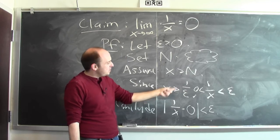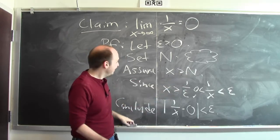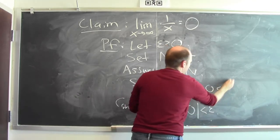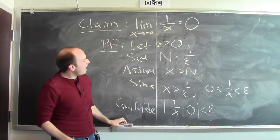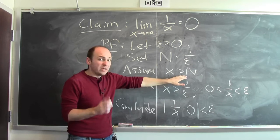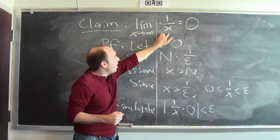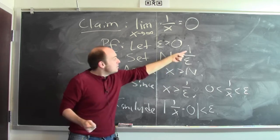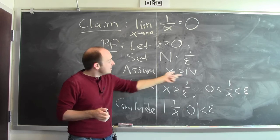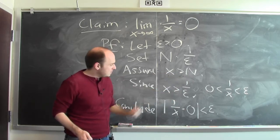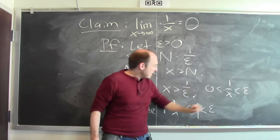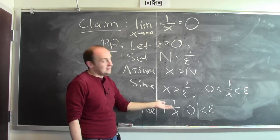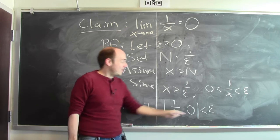So how can I guarantee that x is bigger than 1 over epsilon? I'm going to set N equal to 1 over epsilon. Now look at what I've got here. I set N equals 1 over epsilon, and then I get to assume that x is bigger than N. You're challenging me with epsilon to say that 1 over x is within epsilon of 0. I get to respond by making x sufficiently large — N equals 1 over epsilon. And if x is bigger than N, then x is bigger than 1 over epsilon. And if x is bigger than 1 over epsilon, then 1 over x is between 0 and epsilon. And if 1 over x is between 0 and epsilon, then 1 over x is between minus epsilon and epsilon. That means the absolute value of 1 over x minus 0 is less than epsilon, which is what I wanted: 1 over x is within epsilon of 0.